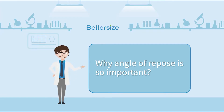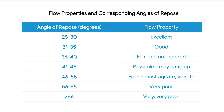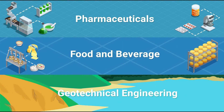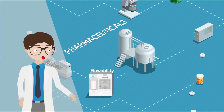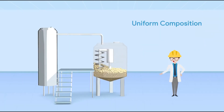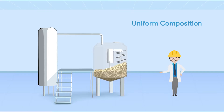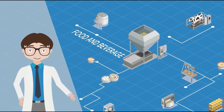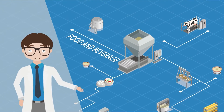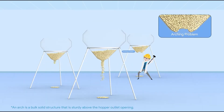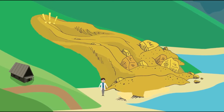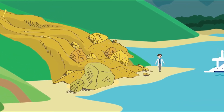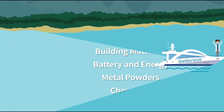Why is angle of repose so important? The angle of repose is important because it allows us to quickly understand the flowability of granular materials in many industries. In pharmaceuticals, the angle of repose can be used to indicate the flowability of granular powders to ensure uniform composition of powder mixtures in drug production. In food and beverage, the angle of repose can be used to design the silo and determine its dimensions, as well as to reduce material waste. In geotechnical engineering, it can be used in the study of slope stability analysis. The angle of repose can also be applied in many other sectors as well.